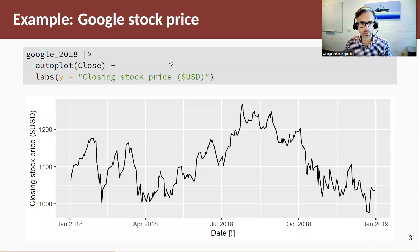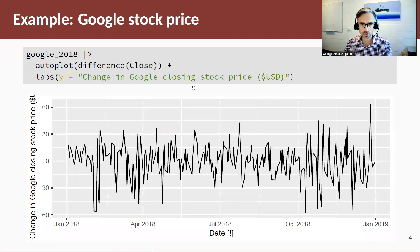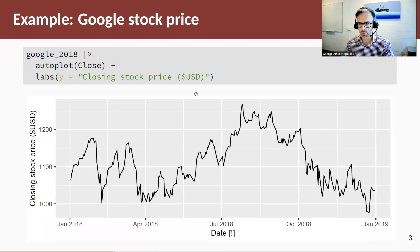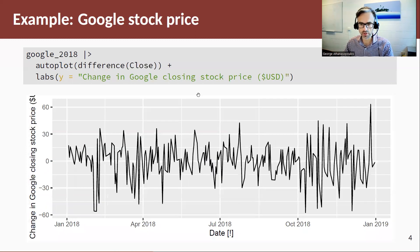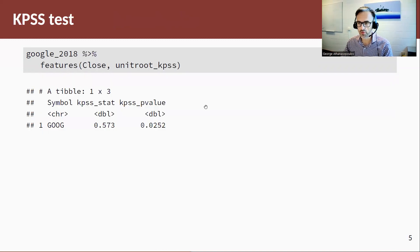Now, as an example, let me remind you we're using the closing stock price for Google for 2018. So remember, we looked at that and we said this is non-stationary, we take a difference and that now looks stationary and even white noise. Let's do that in a formal sense now by using the KPSS test.